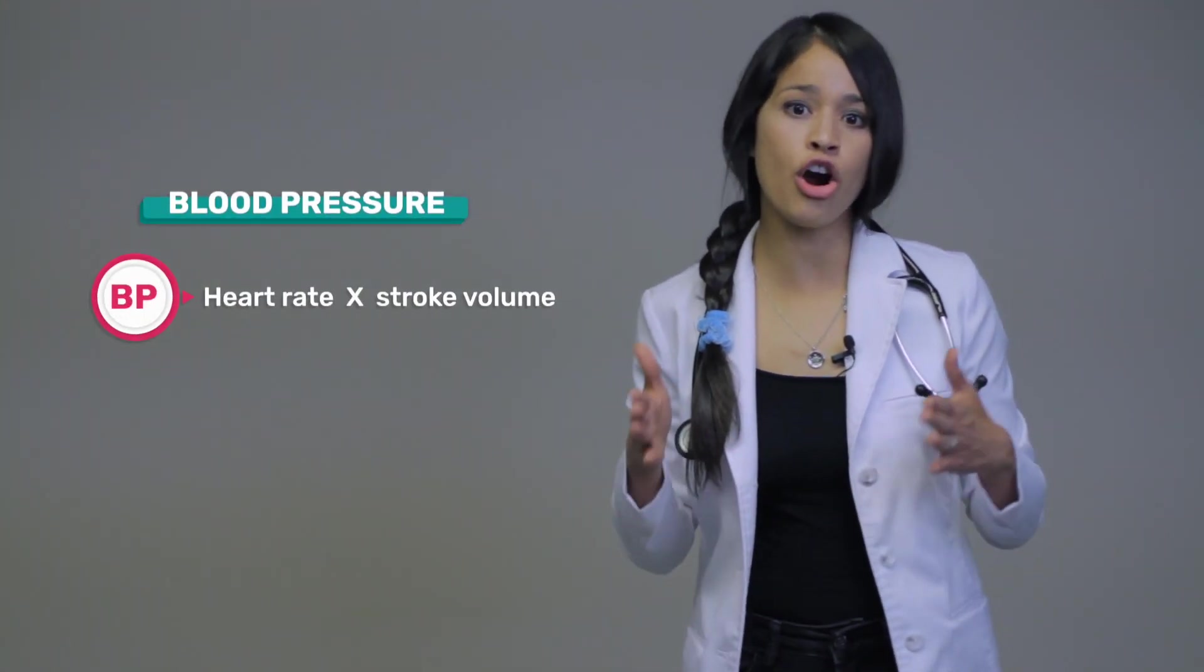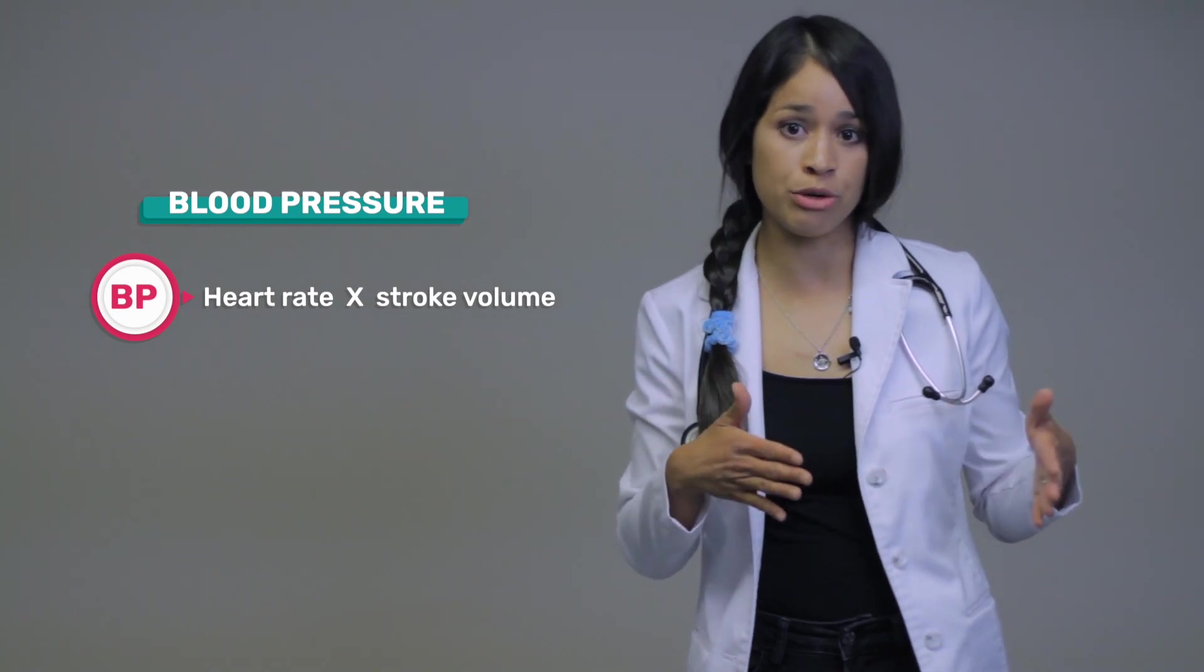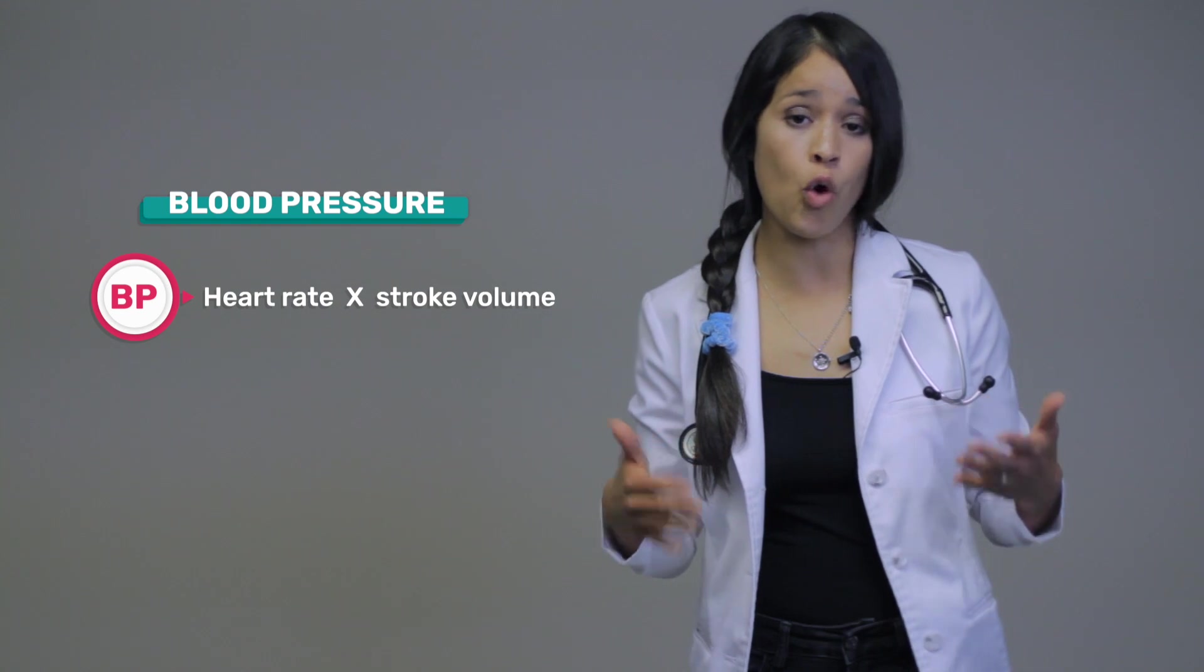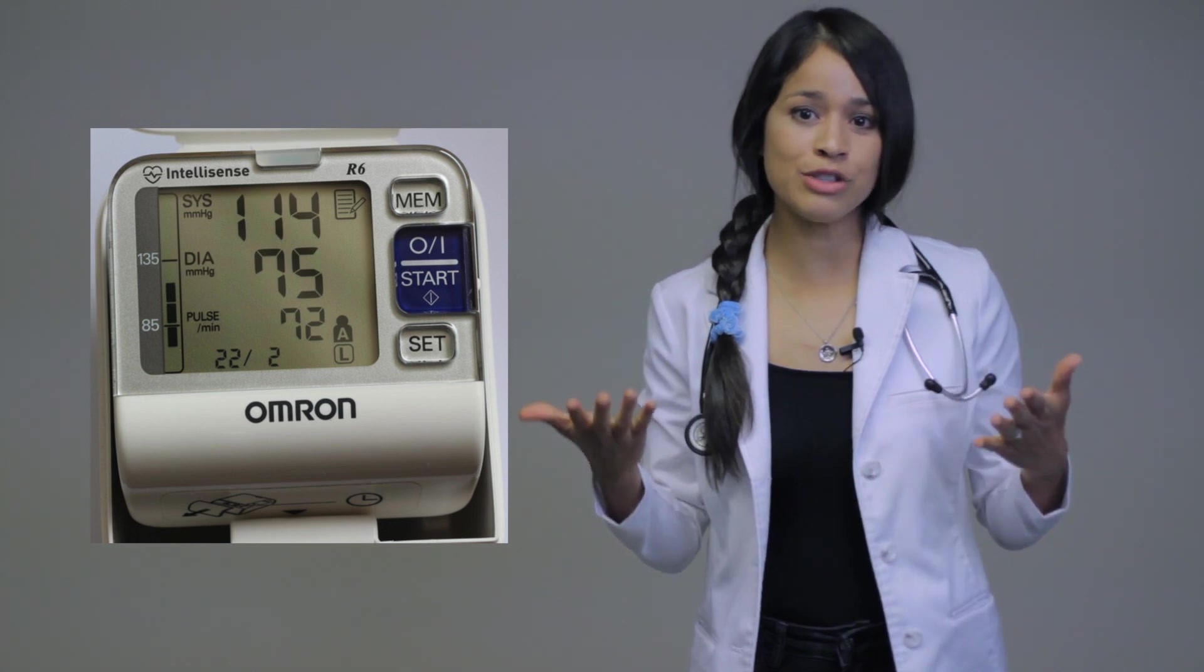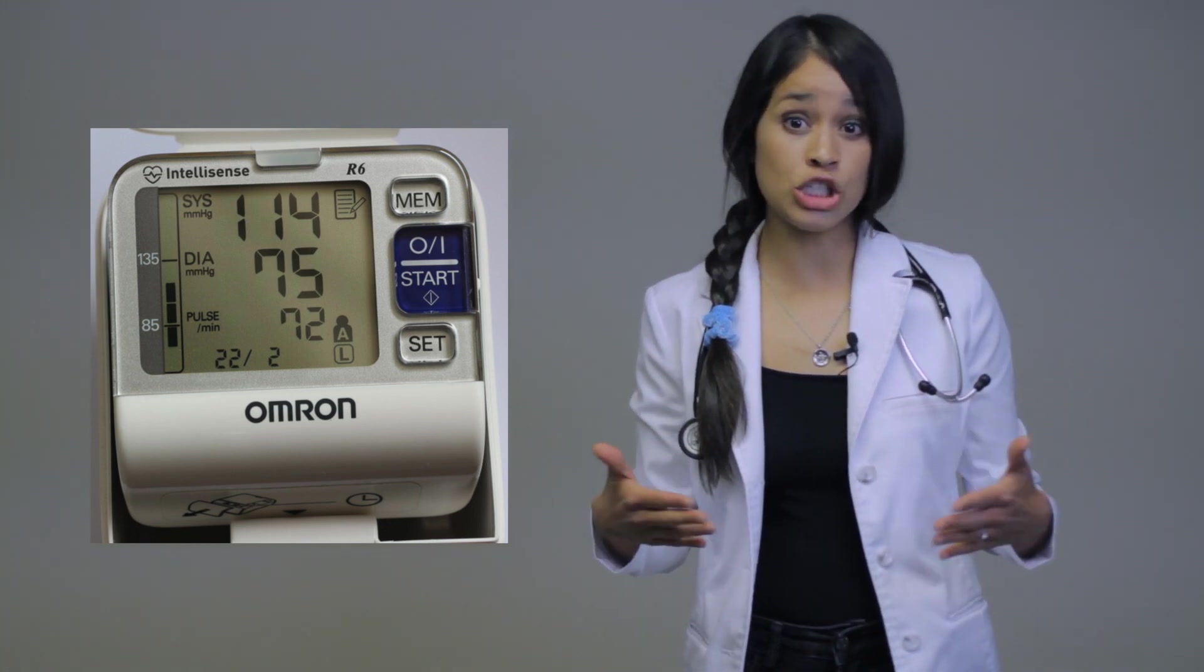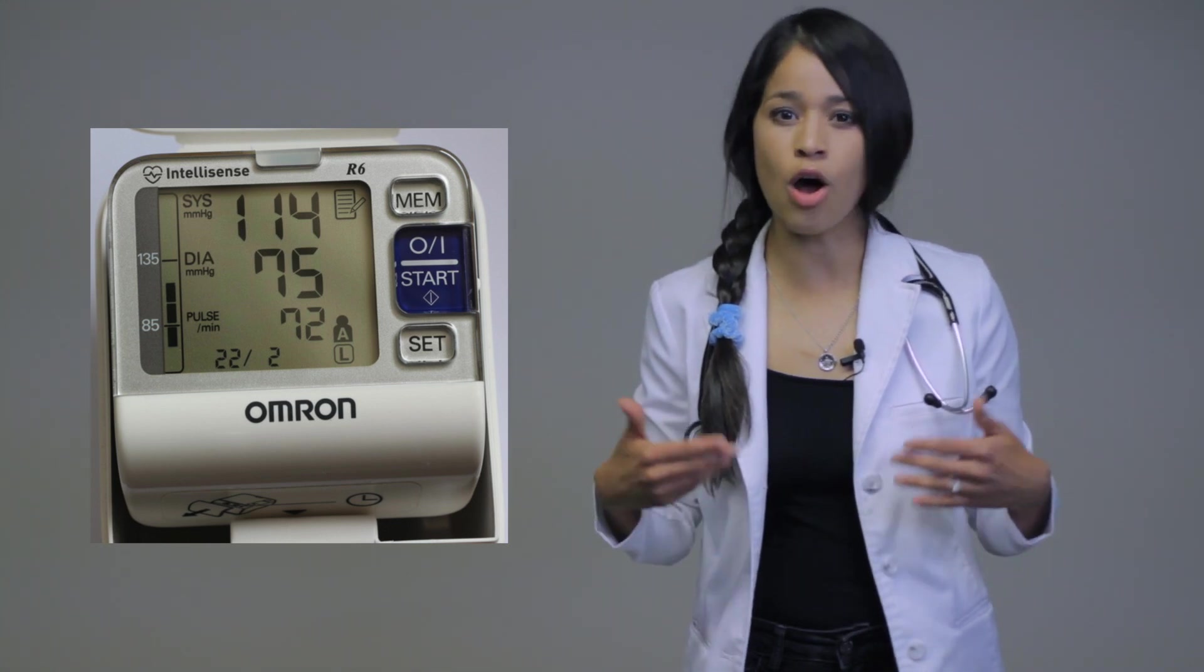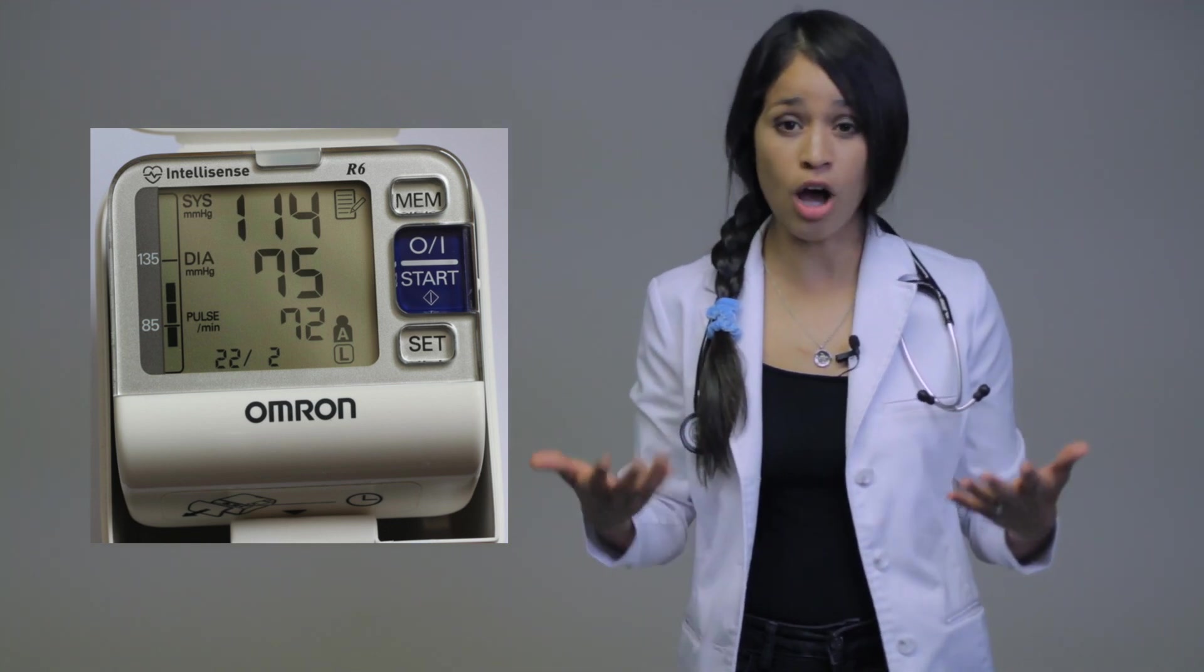Blood pressure is your heart rate times your stroke volume. That gives you a blood pressure reading that equates to systolic over diastolic. So the systolic is the squeeze of the heart. That is what gives you most of your blood to your vital organs that need to be perfused. That is why it's always the highest number on the top.